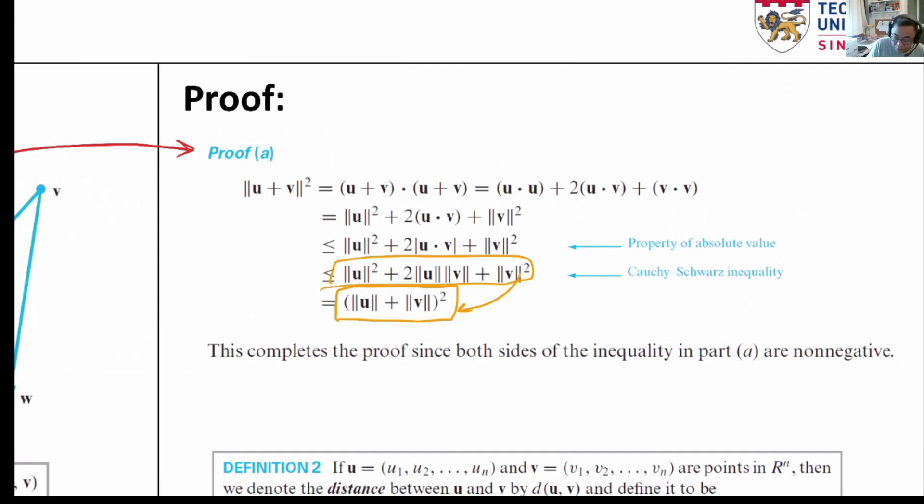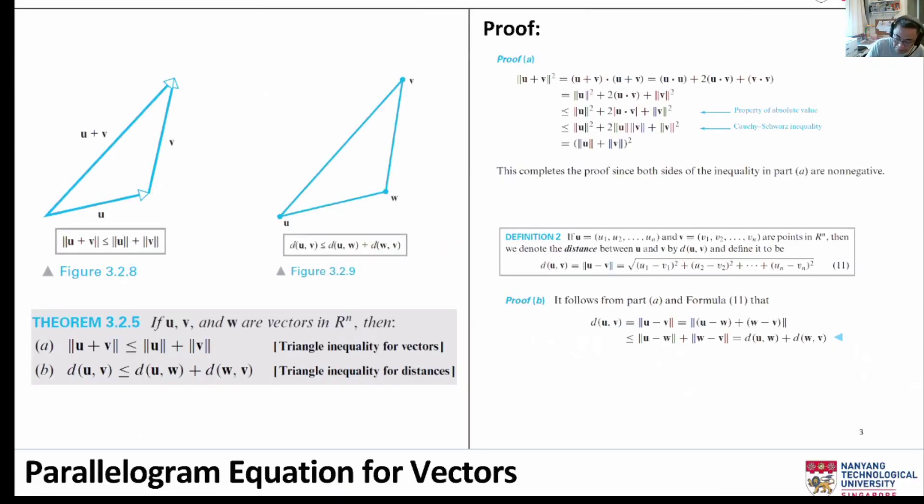Lastly we recognize that we can combine all these expressions as this equation over here. If we take the square root of the left and right hand side then we have norm of u plus v is less or equal to the norm of u plus the norm of v, which is what we wanted to prove from the triangle inequality.